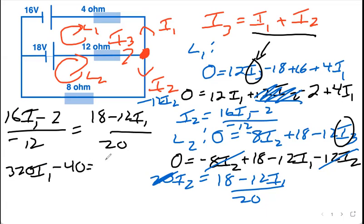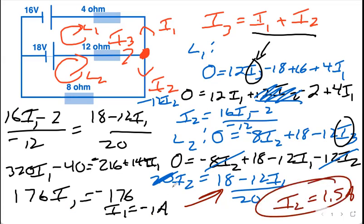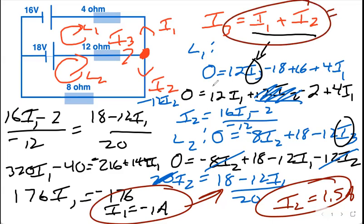Subtract the 144 over, you'll get 176 i1. Add the 40 over, you get negative 176. So i1 equals negative 1 amp. Okay, so i1 equals negative 1 amp. So now we go and we plug back in everywhere else. We can plug back into this one or to this one, doesn't matter. So if I plug in a negative 1 for i1, that'll be 18 plus 12 is 30, 30 over 20, i2 will equal 1.5 amps. Now take both of those and plug back into here. So then i3 will equal negative 1 plus 1.5 will give you 0.5 amps.